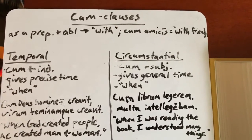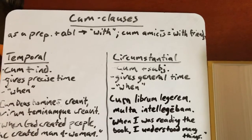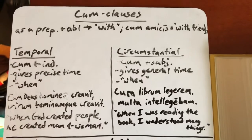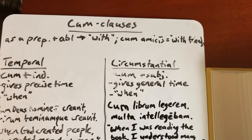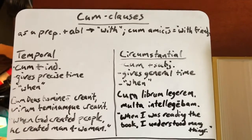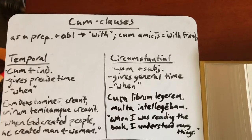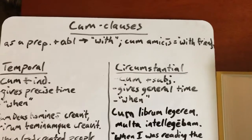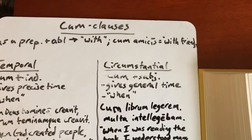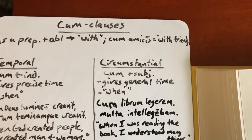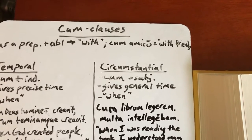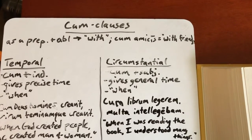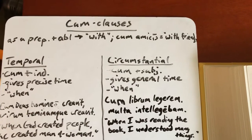I'm going to talk to you about Chapter 31 and the grammar in that chapter. You've got some new forms and a new grammar concept — cum clauses. Up to this point, we've dealt with the word cum only as a preposition that takes an ablative, meaning 'with.' For example, cum amicis means 'with friends.' But the word cum can also be a conjunction.